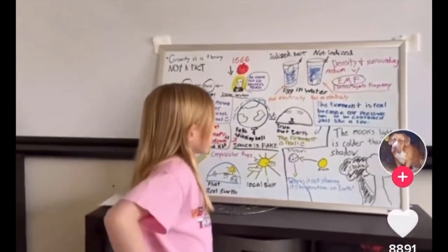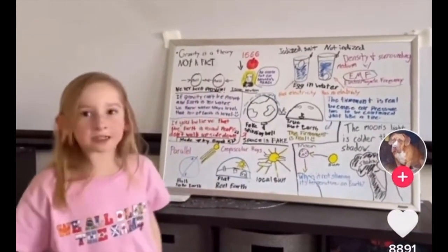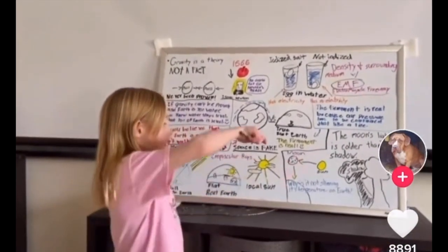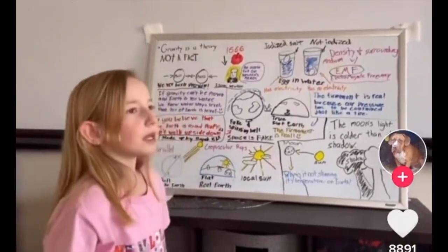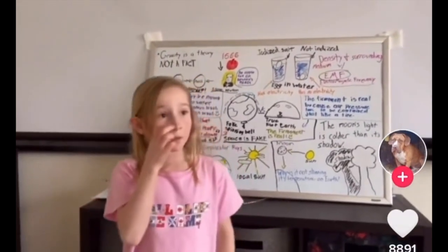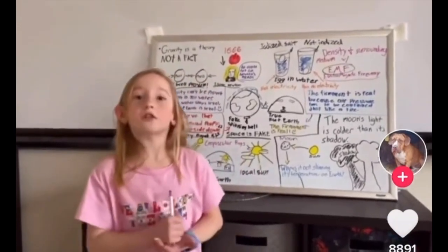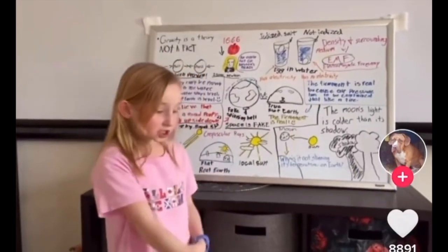Now we are going to move on to a sun, moon, and Earth depiction. The sun is shining on the moon, and the moon is shining on the Earth. Why is it not shining its temperature on Earth? Well, me and my dad did an experiment one night on a full moon, and we used a laser thermometer to check the moon's light and its shadow.